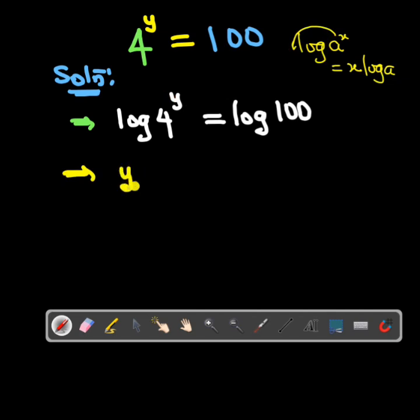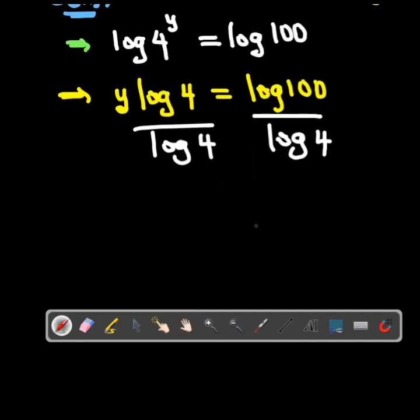we are going to have y log 4 to be equal to log 100. Now we will divide both sides by log 4, so we will have y is equal to log 100